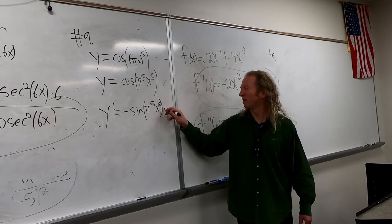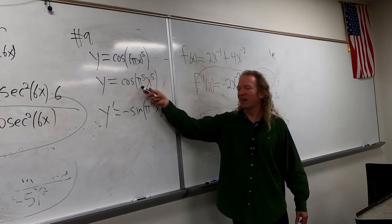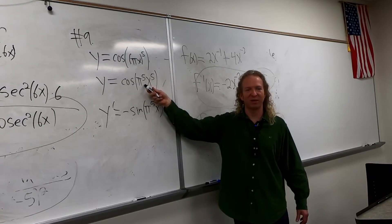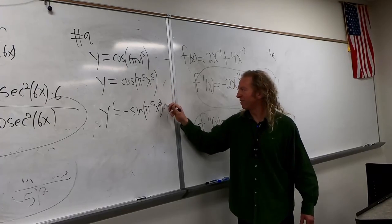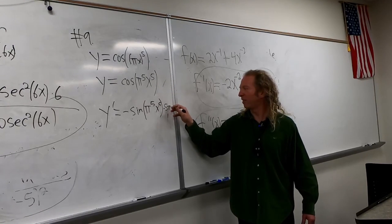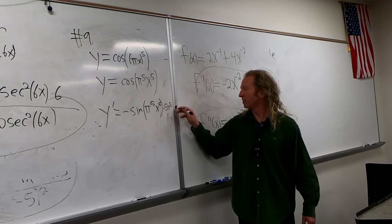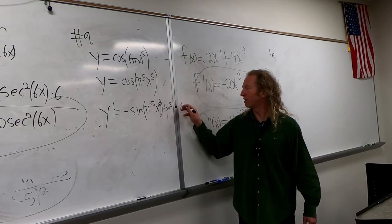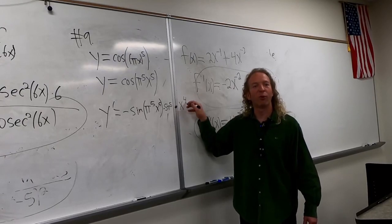Oh, times. I guess this pi to the fifth is a constant, so it hangs out, right? So it'll be five pi to the fifth, running out of room, times x to the fourth power.